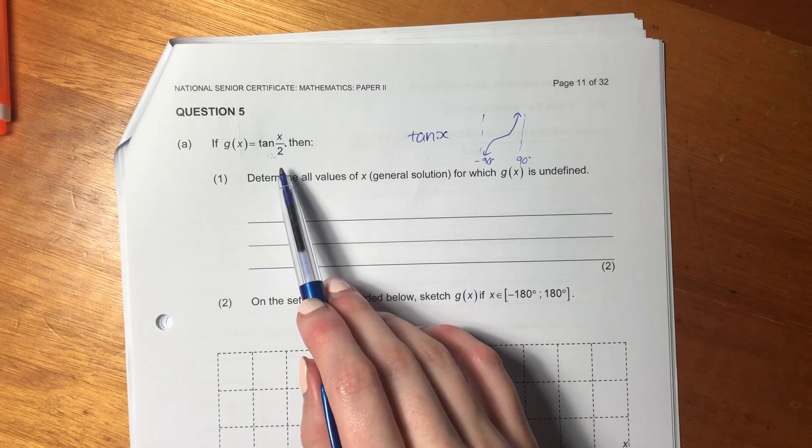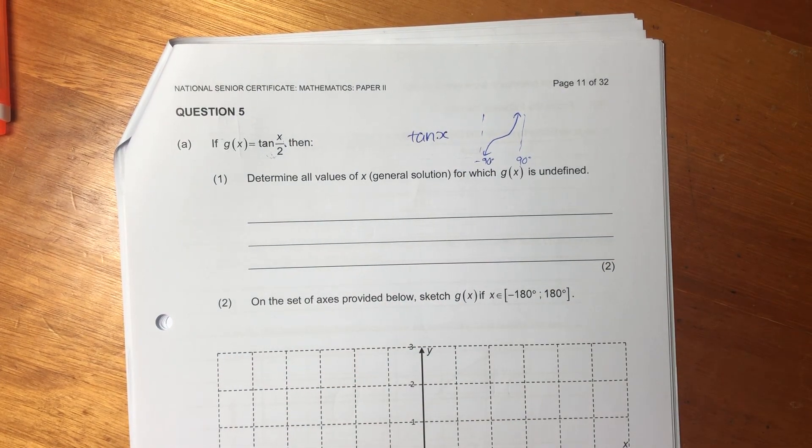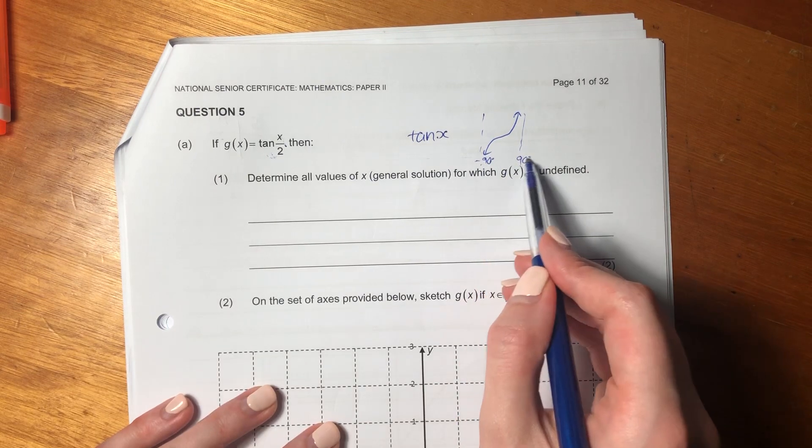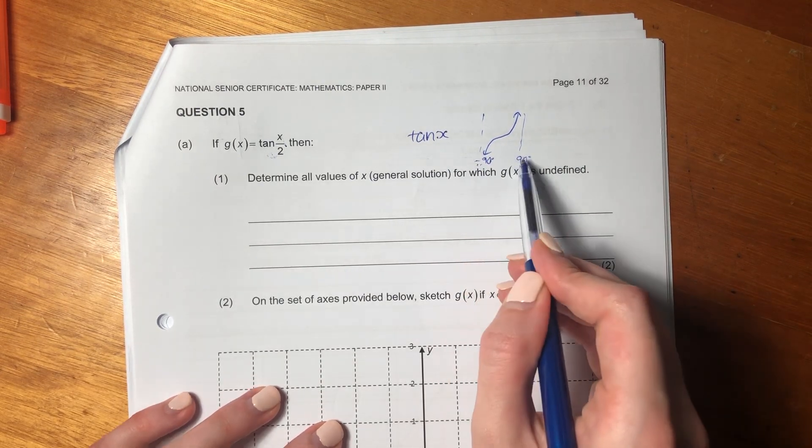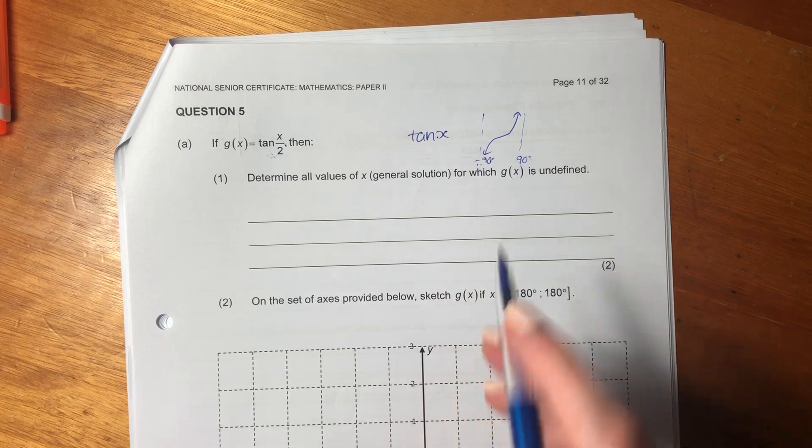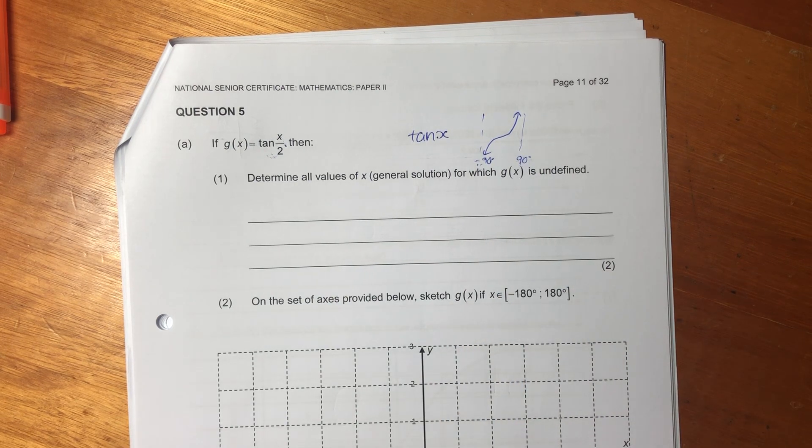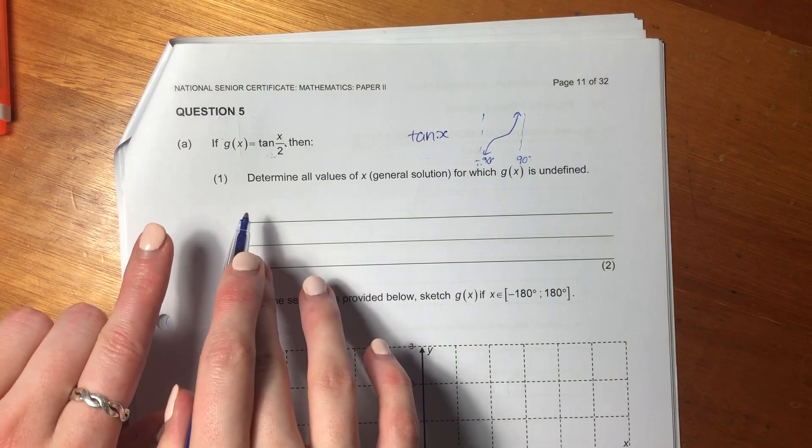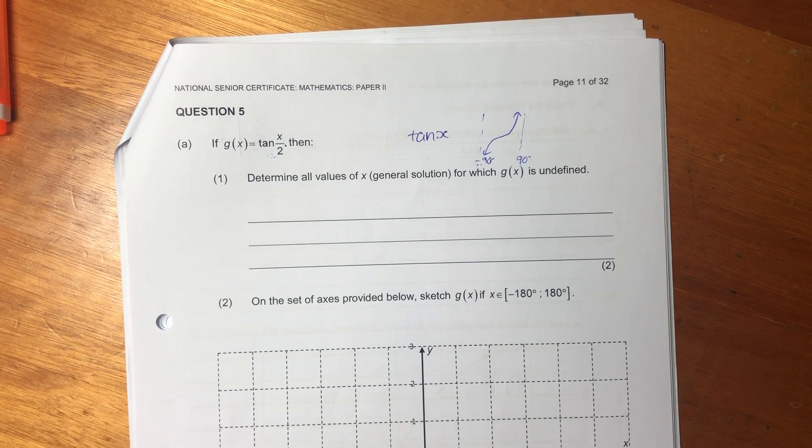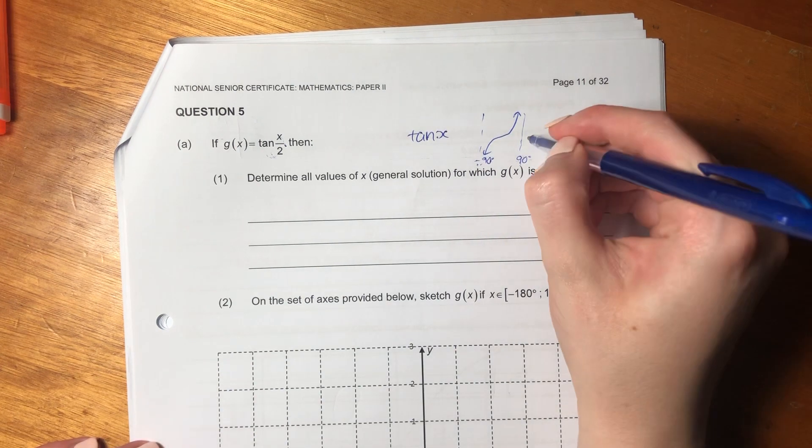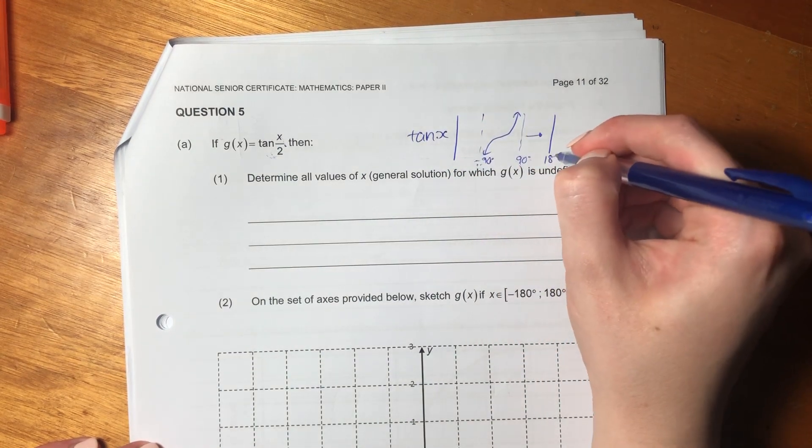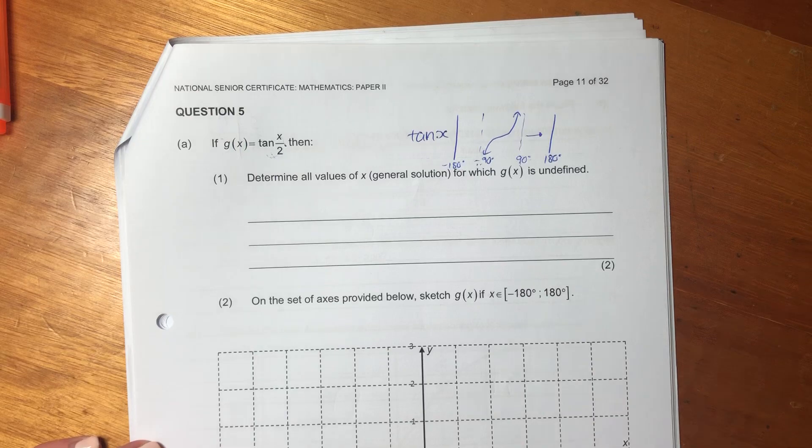But now when we say x divided by 2, what we're saying is we're changing the period of tan. So instead of having one tan graph in 180 degrees, because you agree with me that there's 180 between negative 90 and positive 90, we're saying we only have half of a tan graph in 180. So a full tan graph for this form of tan would be 360 degrees. So what we're saying is we're kind of pushing our asymptotes out. So asymptotes are now going to sit at 180 and negative 180.